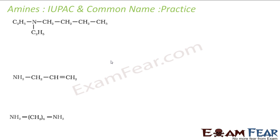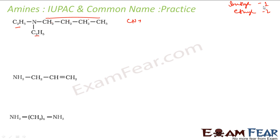Let us take some more examples to clear our concept. In this case, we have to write the IUPAC name and the common name. Let us start with the common name. This is also a tertiary amine because all hydrogens on nitrogen are replaced with alkyl groups — there is a methyl, an ethyl, and another ethyl here, and this butyl is a normal n-butyl. So I have butyl and ethyl here. Starting with alphabetical order, B comes first, so I will use N-butyl. Please note: N is not considered for alphabetical order. So it is N-butyl, diethyl amine. That is the common name.